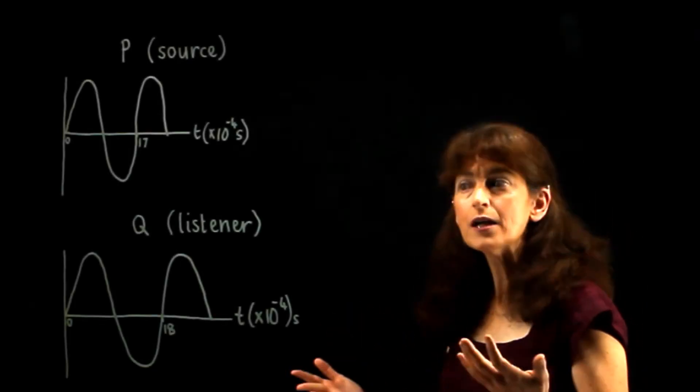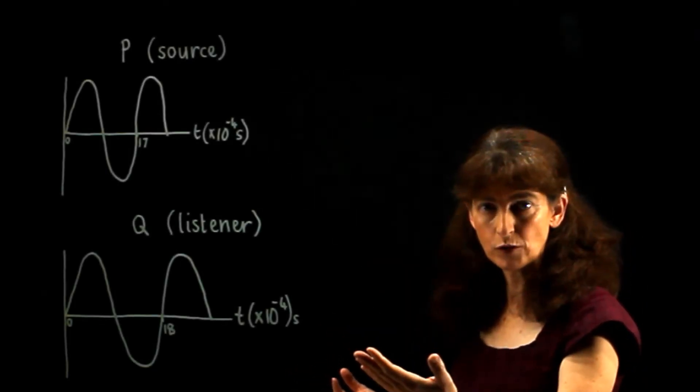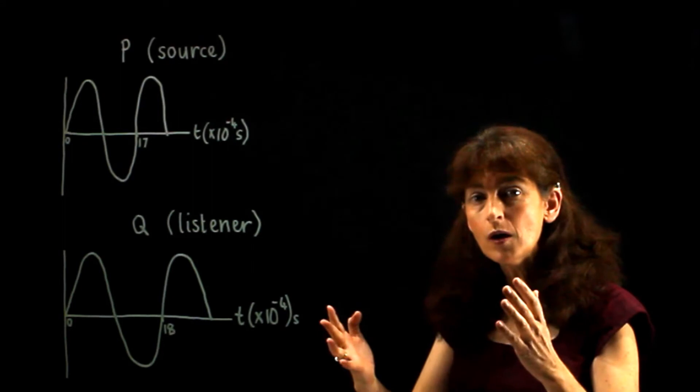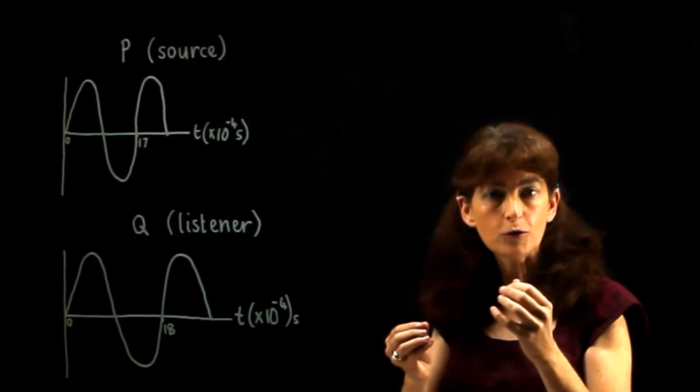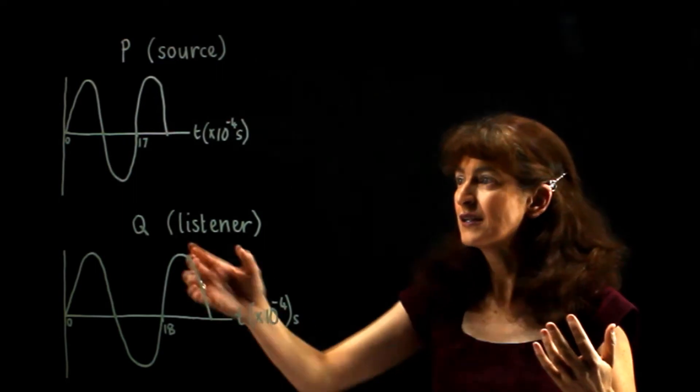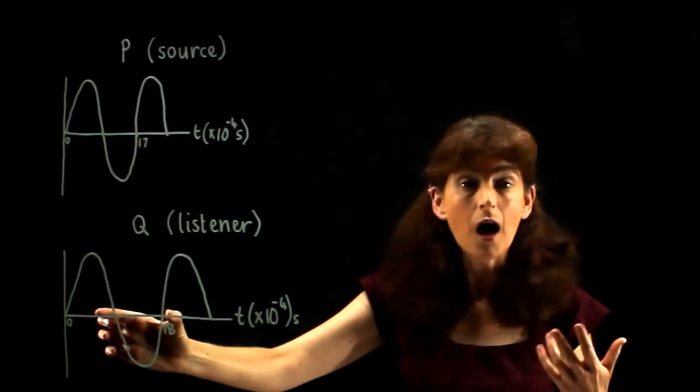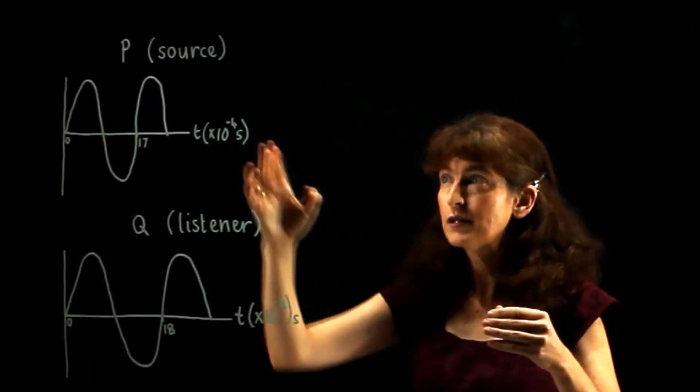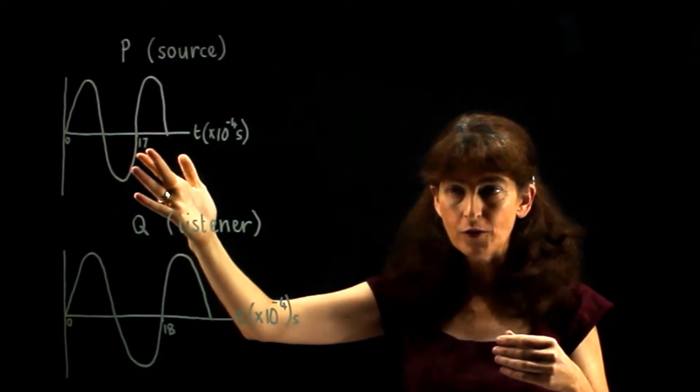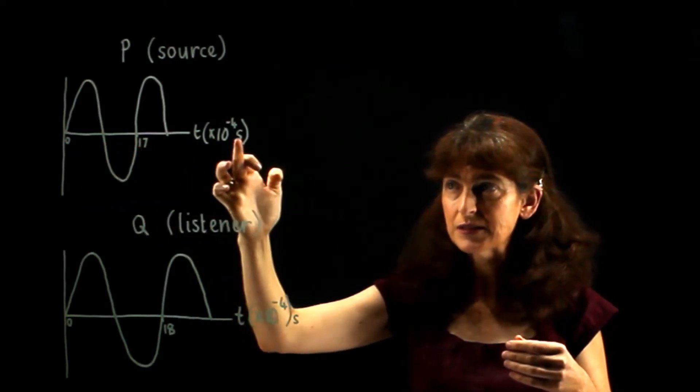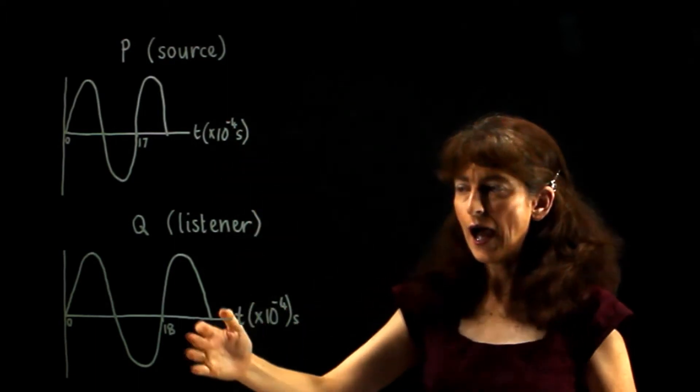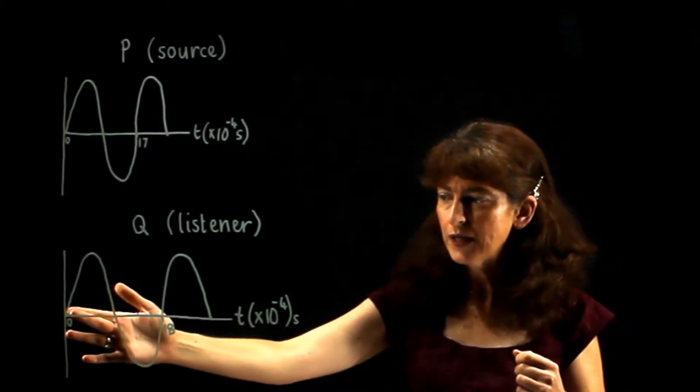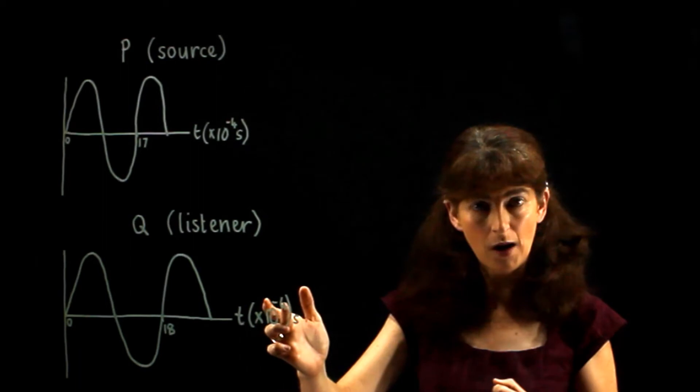We need to know what the period is of each of these wave motions. The period is the time for one full wave to pass a point. The easiest way to get that is this full wave over here. So we can see that for the sound at the source, at P, the period of the wave is 17 times 10 to the power minus 4 seconds. And for the listener, which is stationary away from the moving car, the period of the wave is 18 times 10 to the power minus 4 seconds.